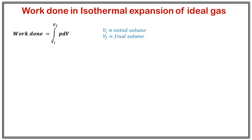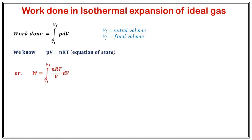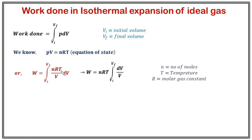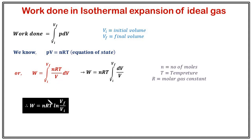This is the expression. Now as we are working with an ideal gas, we need to use the ideal gas equation pV = nRT, where n is number of moles, T is temperature, and R is the molar gas constant. We plug the value of p in terms of T and V. Since n, R, and T are all constant, they come out of the integral, leaving the integration of dV over V from Vi to Vf. Integrating 1/V gives log V, and after plugging in the limits, work done equals nRT ln(Vf / Vi).